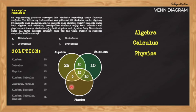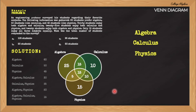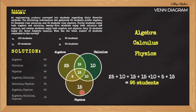Moving forward, the problem stated that there are 45 students that like physics. So we add 5 plus 15 plus 10, that is 30, and subtract this from the 45 who like physics. So 45 minus 30 is 15. There are only 15 students who like physics alone. Our Venn Diagram is now complete. We can now solve the total number of students who responded to the survey. We simply need to add all the values present in the Venn Diagram. So 25 plus 10 plus 15 plus 15 plus 10 plus 5 plus 15 — there are 95 students who responded to the survey. Therefore, from our choices, the correct answer is letter C.